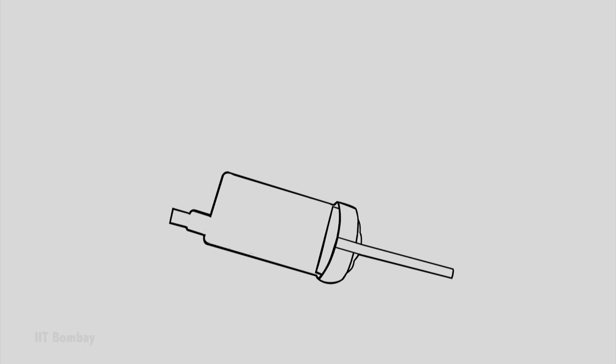If our system is the air inside the cylinder of the foot pump, it will be laid out with dotted lines. Whatever is inside the dotted line is our system — the air inside this cylinder.